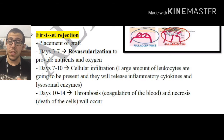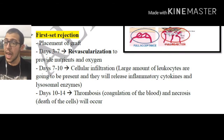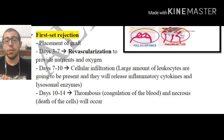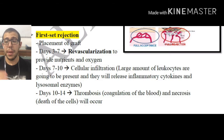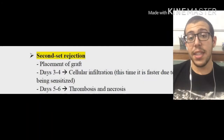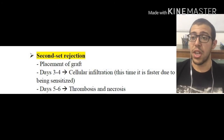Days 10 to 14, thrombosis is going to be occurring — that means coagulation of the blood — and necrosis. We have distinguished previously the difference between necrosis and apoptosis on this channel. Necrosis is going to be taking place, which is also going to be resulting in an inflammatory response. So in days 10 to 14 thrombosis and necrosis are occurring. That was for the first set rejection.